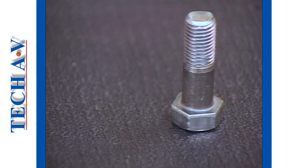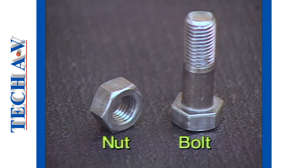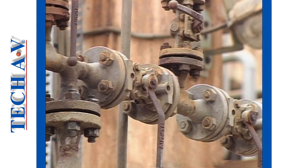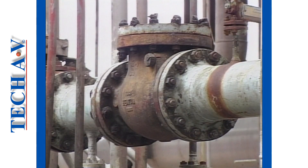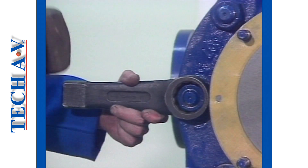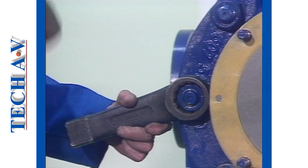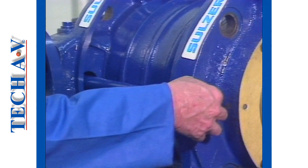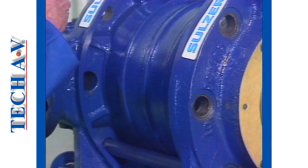One of the most common types is the bolt. Along with a bolt there will always be its matching nut. You will find bolts and nuts in many places, especially where a join is made in, for example, pipe work. Some pieces of equipment, such as this centrifugal pump, are totally secured with bolts and nuts.